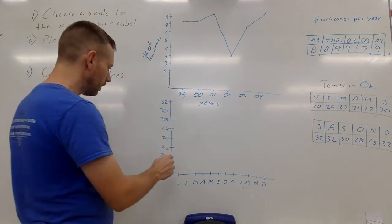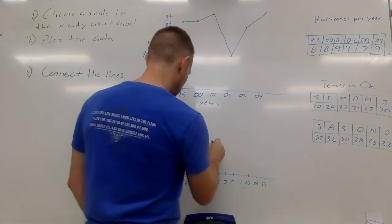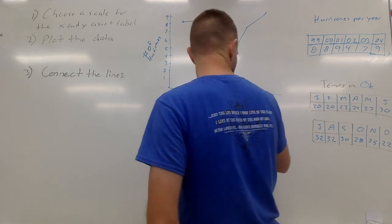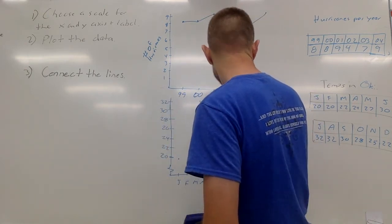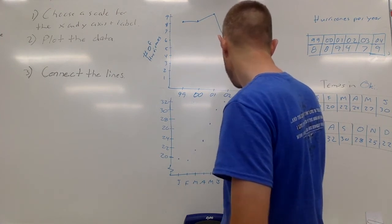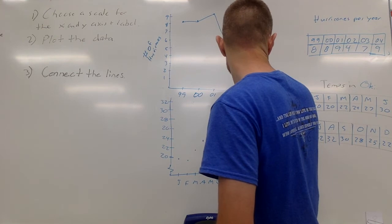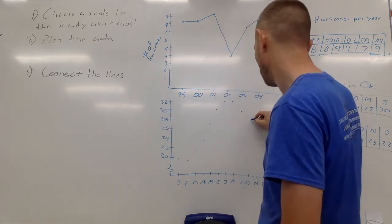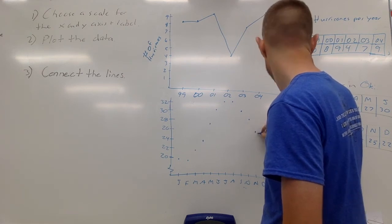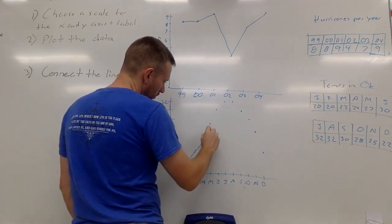Now I'm going to plot all these points. Let's see, 20, 20, 22... When you're doing this on graph paper, you're going to have lines all on here, right? So now when I connect these, we can see, just as we expect, the summer months are hotter.